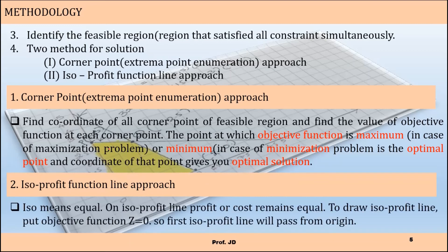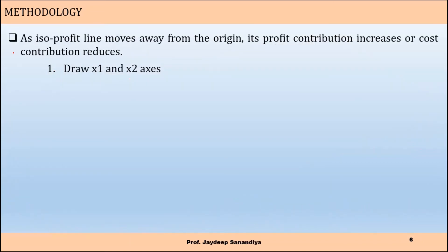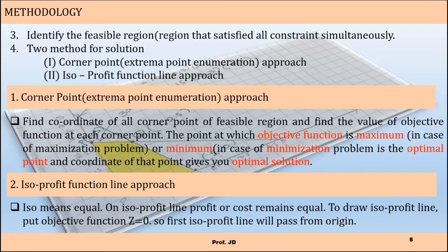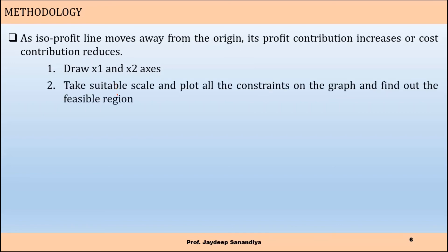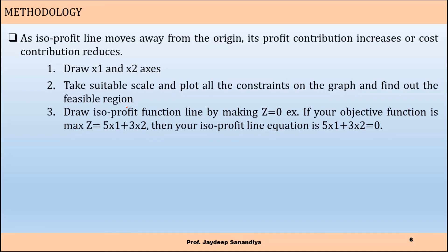The second method is the isoprofit function line approach. 'Iso' means equal — on an isoprofit line, profit or cost remains equal. Draw the isoprofit line by setting the objective function z = 0, so the first isoprofit line passes through the origin. As the isoprofit line moves away from the origin, profit contribution increases or cost contribution decreases. The methodology is: draw the x1 and x2 axes, take a suitable scale, plot all the constraints, and identify the feasible region — no need to find corner point coordinates yet. Then draw the isoprofit function line by making z = 0.